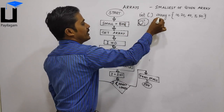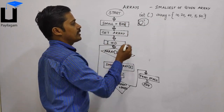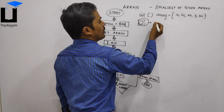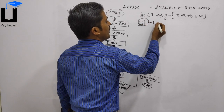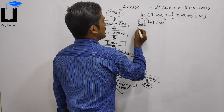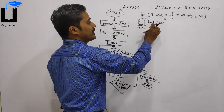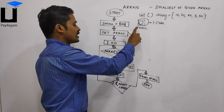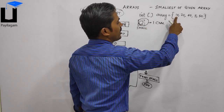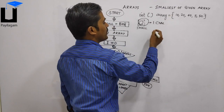You initialize the small variable with array index zero. Array of zero is 10. Now let's see how big it is.